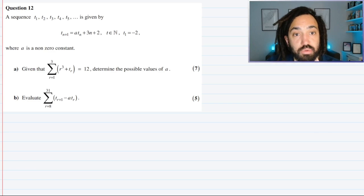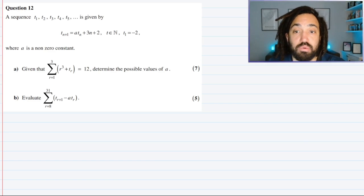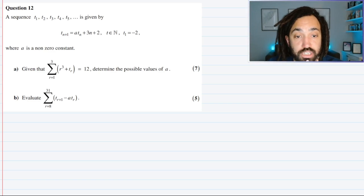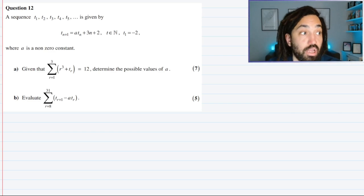So a sequence t1, t2, t3, and so on, is given by t_{n+1} is equal to a*t_n plus 3n plus 2, for t natural number and t1 equal to minus 2, where a is a non-zero constant. Given that the summation up to the third term, starting from the first, of r cubed plus t_r is equal to 12, find the possible values of a.